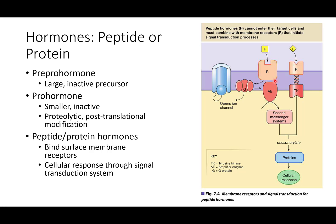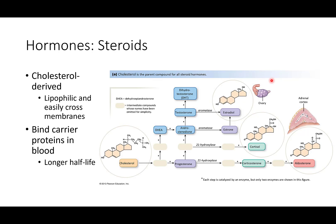Now let's talk about steroid hormones. Steroid hormones are derived from cholesterol, which is a lipophilic molecule — meaning it is able to easily cross cell membranes. All steroids are derived from cholesterol and get turned into precursors: either progesterone, which has a couple of different pathways, or androstenedione. Androstenedione usually gets converted into testosterone, and testosterone can get converted into estradiol. So testosterone and estrogen are our sex steroids.